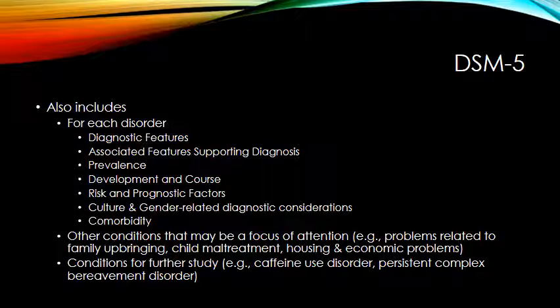In addition to the main 347 disorders in the DSM, it also has other conditions that it says to pay attention to — things like problems related to family upbringing, child maltreatment, or housing and economic problems. These may not lead to depression or anxiety, but there's still some problem in functioning that should be considered. The DSM-5 also has a section on conditions for further study — disorders they don't know enough about yet to formally classify, but based on research and experience, may be classified as disorders in the future.